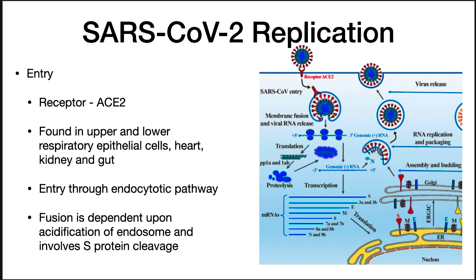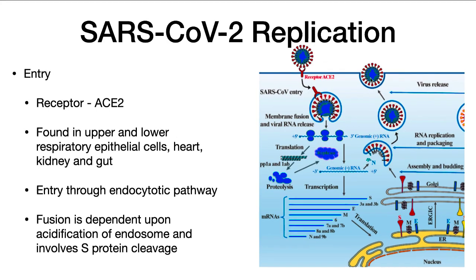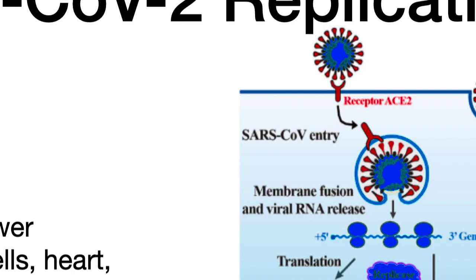SARS-CoV-2 replication: SARS-CoV-2 enters cells by attaching to the ACE2, the angiotensin converting enzyme 2 receptor. These receptors are common on epithelial cells that line the lung, heart, kidney, brain, and gut, thus accounting for the targets of the virus. Once SARS-CoV-2 binds, the virus is taken into the cell by the endocytotic pathway. Entry of the virus into the cytoplasm is dependent upon acidification of the endosome, which involves spike protein cleavage and a conformational change.